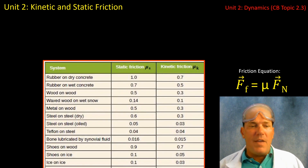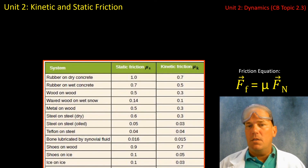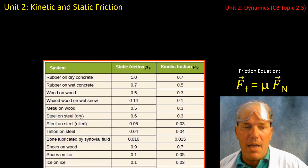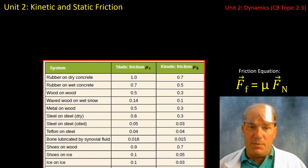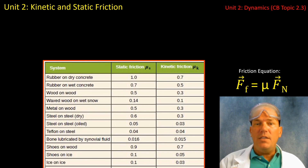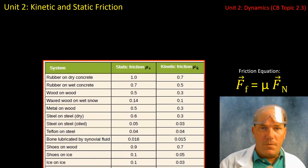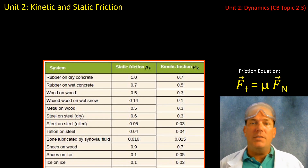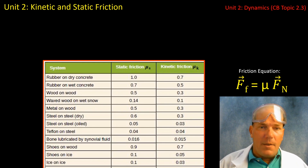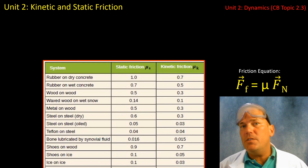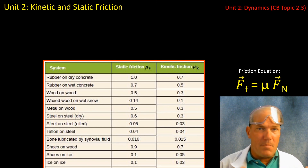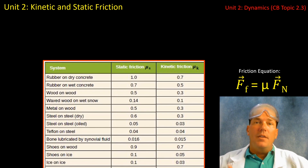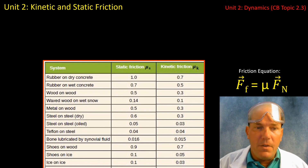Here are some values for mu. As I said in a previous video, and as you will do in lab, it is determined experimentally. You can see that static friction mu values on the left are always greater than kinetic friction mu values on the right. Please recall that these interactions between the two surfaces are the result of microscopic interactions that cause the force of static and kinetic friction.